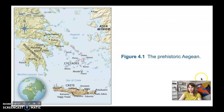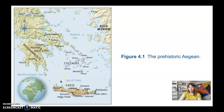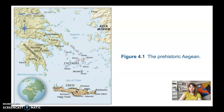We already talked about the three geographic areas of the prehistoric Aegean: the Cyclades, Crete, and the Peloponnesus, but we didn't really talk about the names of the art from each place. Cyclades islands produce Cycladic art, Crete features art known as Minoan art — named after King Minos — and the Greek mainland or Peloponnesus features art called Helladic art.